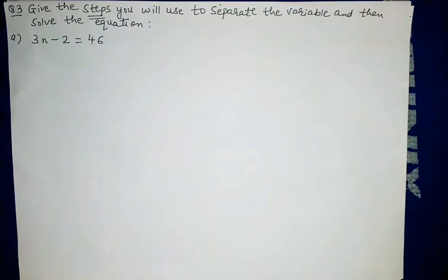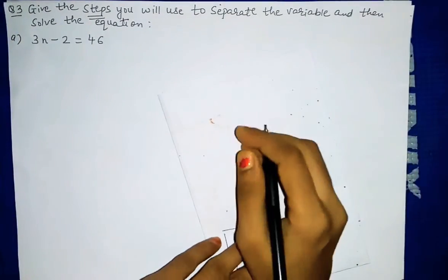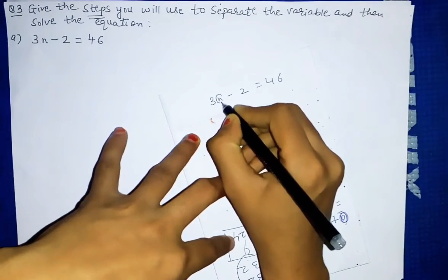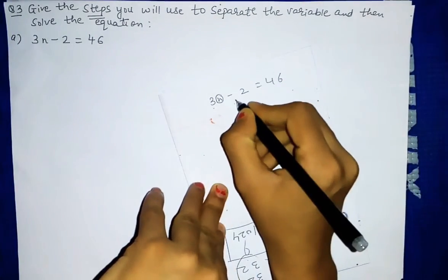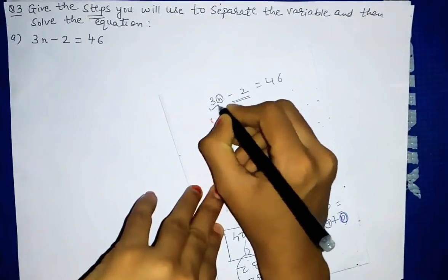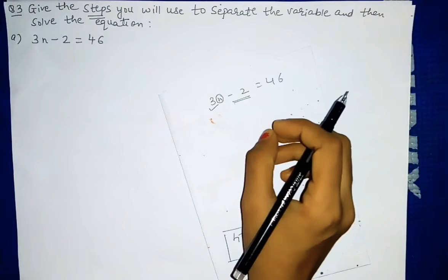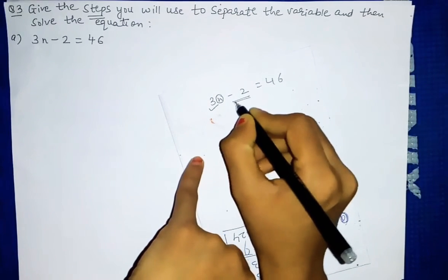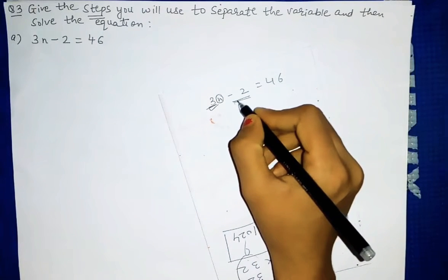The first question is 3n minus 2 equal to 46. We want to find the value of this variable, so whatever terms are attached with this variable, we have to remove them one by one. First this minus 2 we have to remove, and then this 3 we have to remove. So there will be two steps. In previous questions 1 and 2 there was only one step, but here more than one step we will have to do.